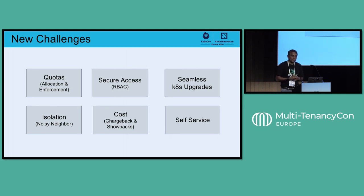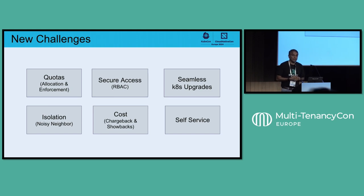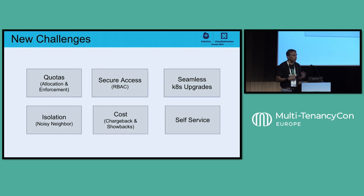The second consideration is isolation. If you have noisy neighbors in a shared infrastructure, you can have a problem. The third thing is about access. If I am an application developer and I can access my namespace, but another person can also see my namespace, I have a problem. So how do I separate access? And how do I do cost management? If I have a shared cluster, how do I charge back to my business unit and say that your quota costs you X euros a month?